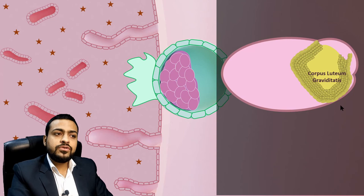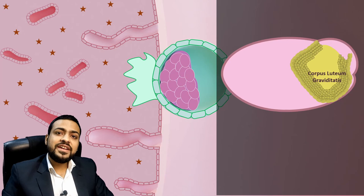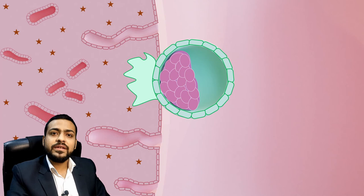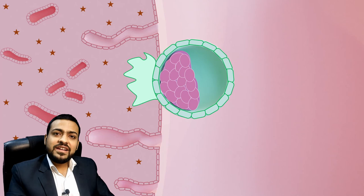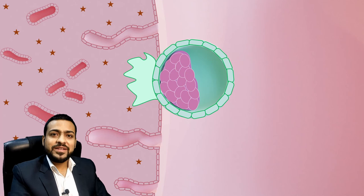The corpus luteum of pregnancy remains for about two months, continuing to secrete progesterone. After that it degenerates, the placenta is formed, and the placenta secretes its own progesterone. Another thing HCG does is induce nausea in the pregnant woman. Most pregnant women, especially in the first trimester, experience nausea because of HCG. Hundreds of years back, before pregnancy tests existed, elder ladies in the family would see that a woman was nauseating and conclude she must be expecting a baby.